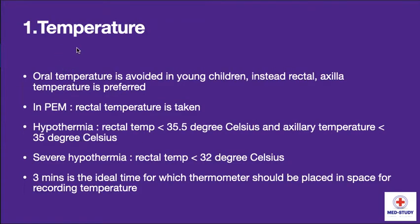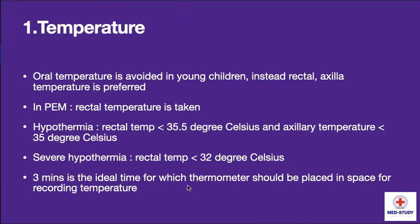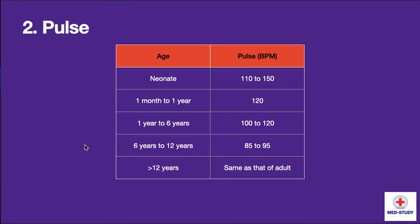Coming to temperature, oral temperature is avoided in young children; instead rectal or axillary temperature is preferred. In protein energy malnutrition, rectal temperature is taken. Hypothermia is when rectal temperature is less than 35.5 degrees Celsius, and accelerated hypothermia is when temperature is less than 35 degrees Celsius. Severe hypothermia is when rectal temperature is less than 32 degrees Celsius. Three minutes is the ideal time for which the thermometer should be placed for recording temperature.